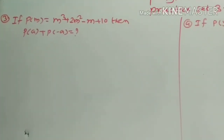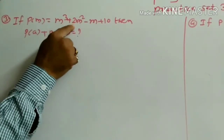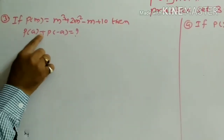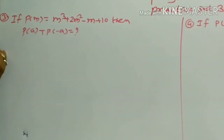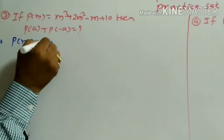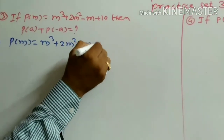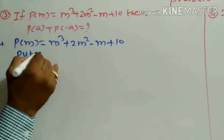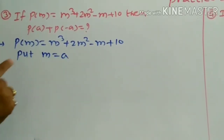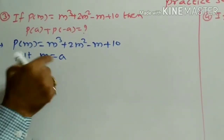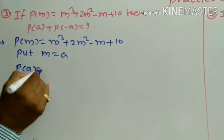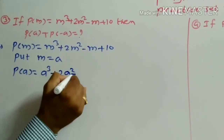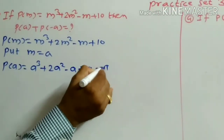The next example is: if p(m) = m cubed plus 2m squared minus m plus 10, then find p(a) plus p(minus a). Given p(m) = m cubed plus 2m squared minus m plus 10. First, to find p(a), put m equal to a. So p(a) = a cubed plus 2a squared minus a plus 10. This is equation 1.